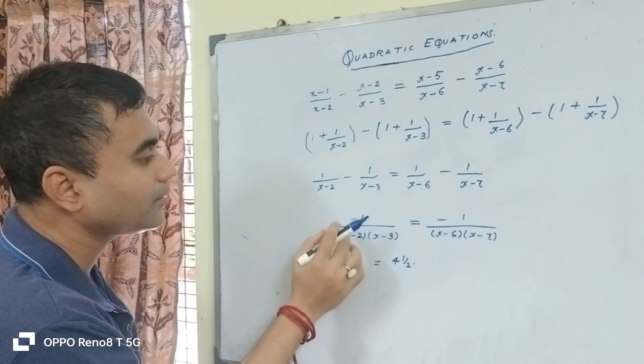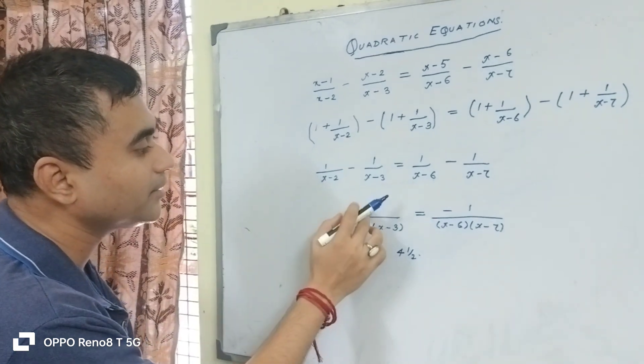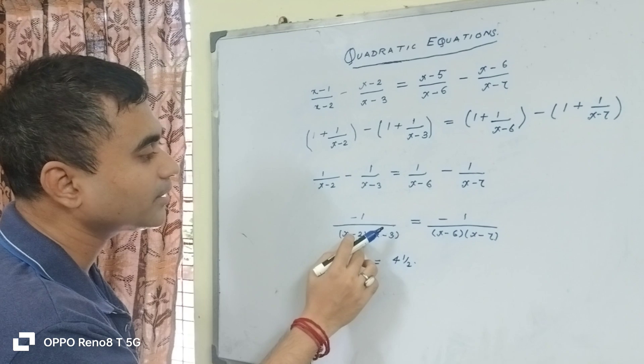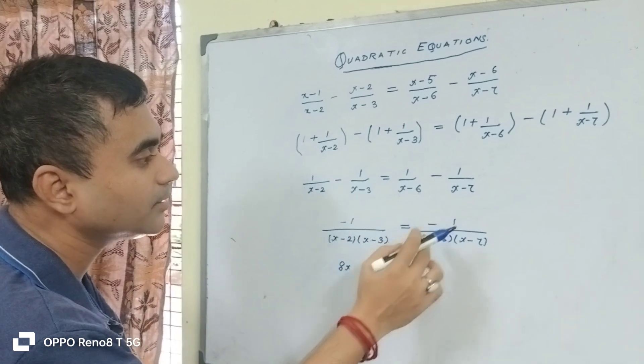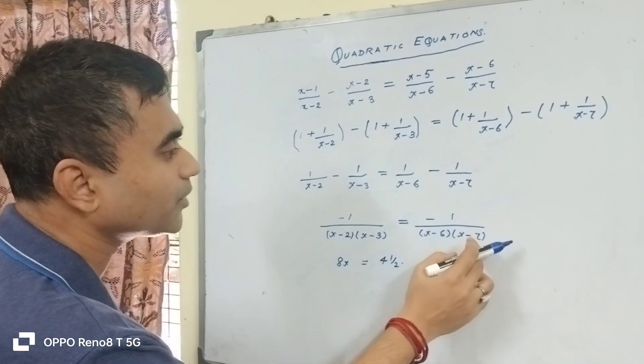You will get the resultant like this: -1 over (x-2)(x-3) equals -1 over (x-6)(x-7).